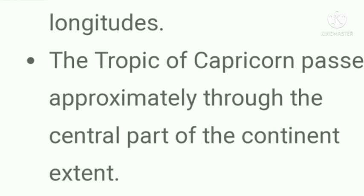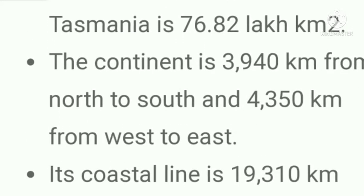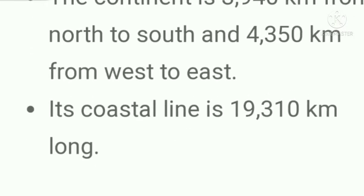Extent: The total area of the continent including the island of Tasmania is 76.82 lakh square kilometers. The continent is 3940 kilometers from north to south and 4350 kilometers from west to east. Its coastline is 19,310 kilometers long.